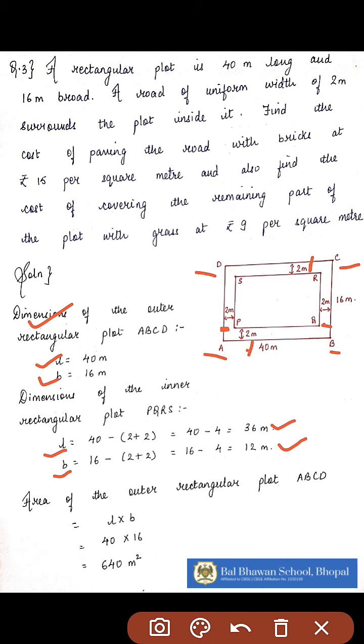In this way we are able to find out the dimensions of the outer rectangle and the dimensions of the inner rectangle. Now when we subtract the area of both the rectangles, we will automatically get the area of the road, which we have to find out in order to find the cost of paving that particular road with bricks.